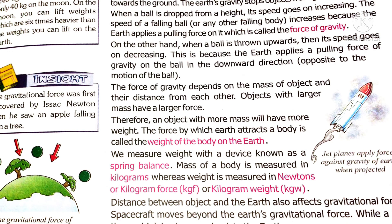So weight and mass are completely different terms. In everyday language and in chemistry, we often use 'weight' in place of 'mass,' but they are actually different. Just as we measure body temperature using a thermometer, weight of the body is measured by a spring balance. The unit of mass is kilograms, whereas the unit of weight is newtons, or kilogram-force, or kilogram-weight.